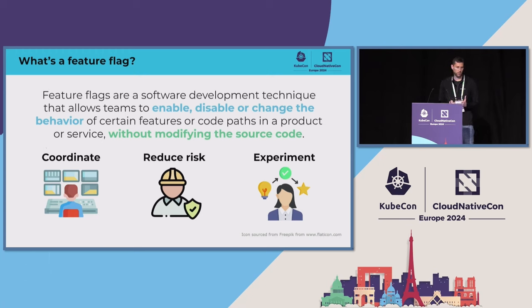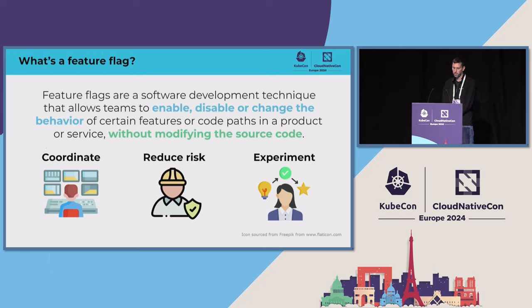Teams are also able to experiment using feature flags by defining a control group and multiple different variations and then testing the impact that the feature has. So really, they become very essential to the whole modern software development lifecycle.